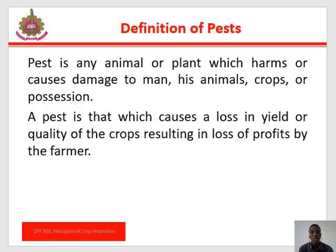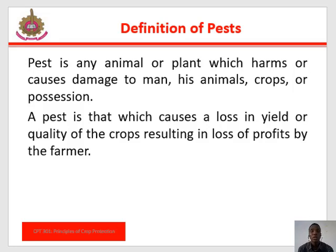When loss in yield in a particular crop reaches 5 to 10 percent, a pest status is established. Economic damage is the amount of injury done to a crop which would justify the cost of artificial control measures. The economic injury level is the lowest pest population density that will cause economic damage to a crop, and this varies from crop to crop, season to season, and area to area. The economic threshold is defined as the population density at which control measures should be started to prevent an increase in pest population from reaching the economic injury level.